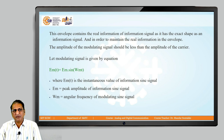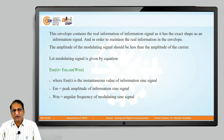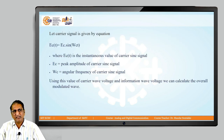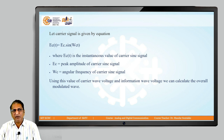Where E_m(t) is the instantaneous value of the information signal and E_m is the peak amplitude of the modulating signal. Similarly, the carrier is represented by the equation E_c(t) = E_c · sin(ω_c · t), where E_c(t) is the instantaneous value of the carrier signal, E_c is the peak amplitude of the carrier signal, and ω_c is the angular frequency of the carrier signal.